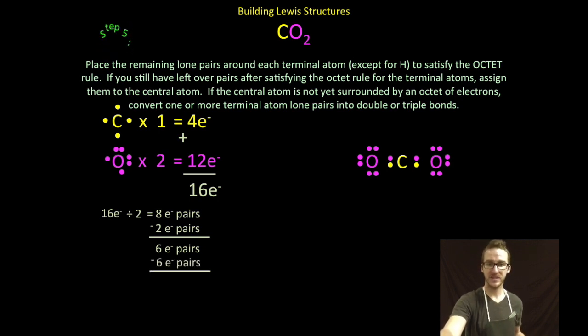As I think about this Lewis structure it's not quite correct, because even though I was able to get an octet to each of my terminal oxygen atoms, notice that my carbon central atom only has four. I don't have any pairs left to give my central carbon atom.